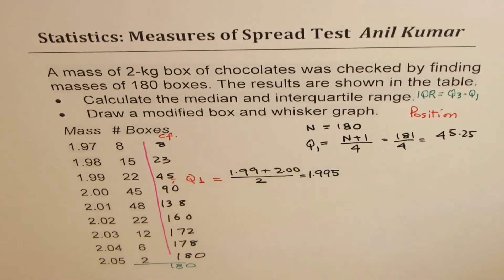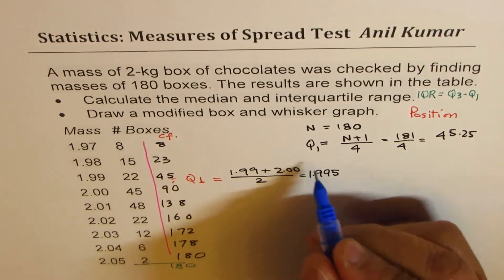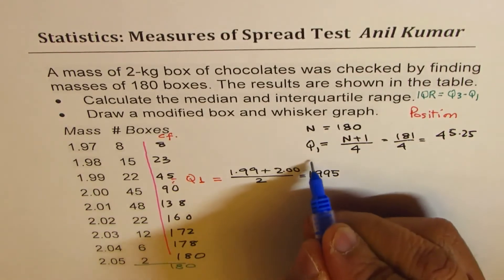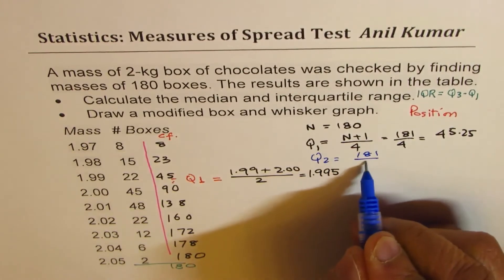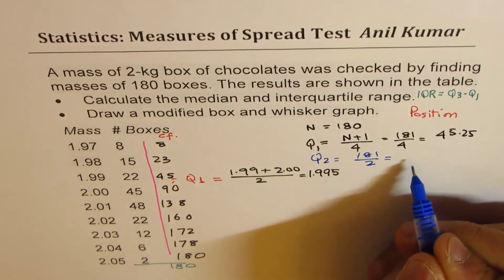Now to find Q2, well let's do it here. Q2 will be 181, n plus 1, divided by 2, half of this.